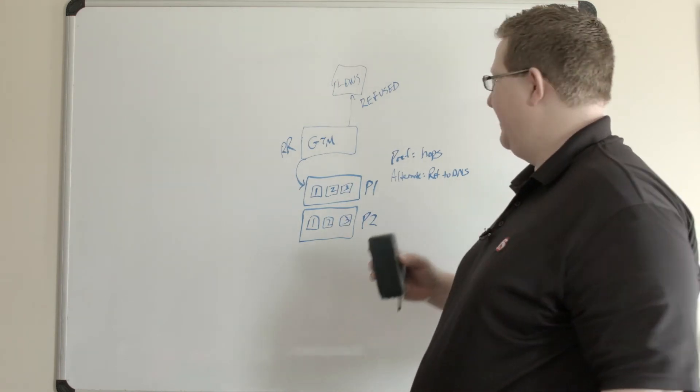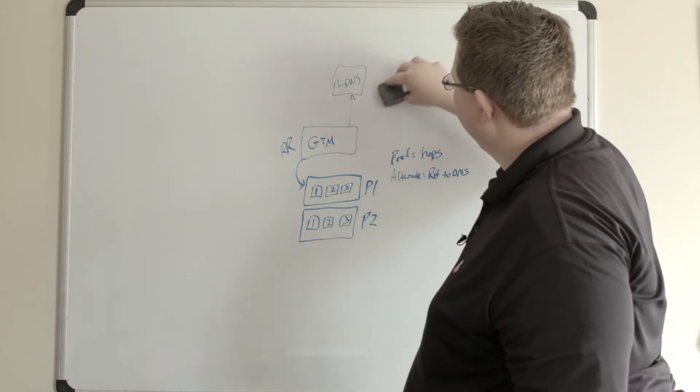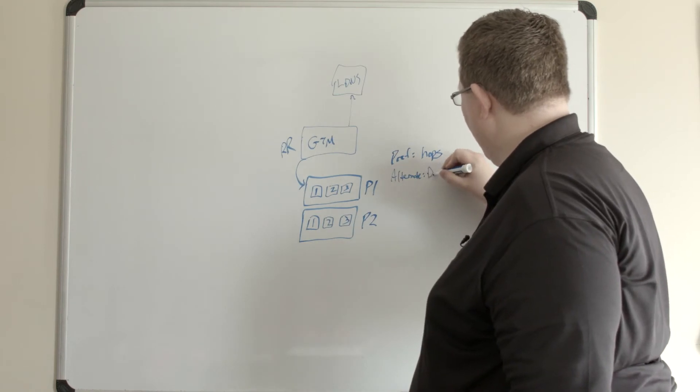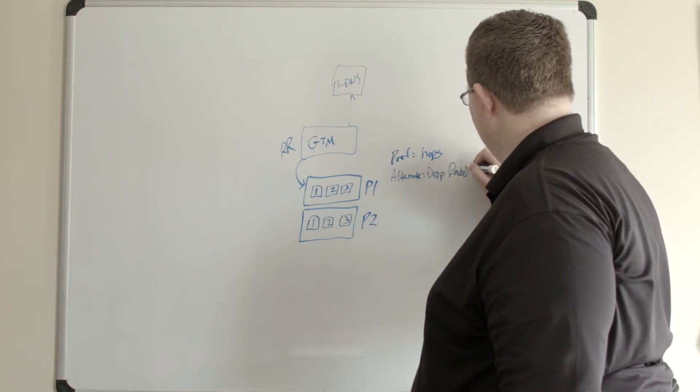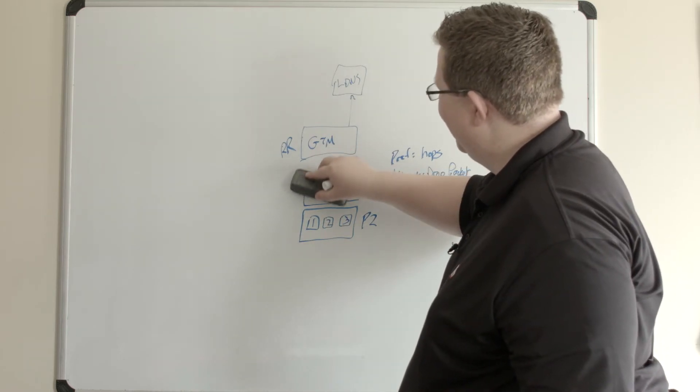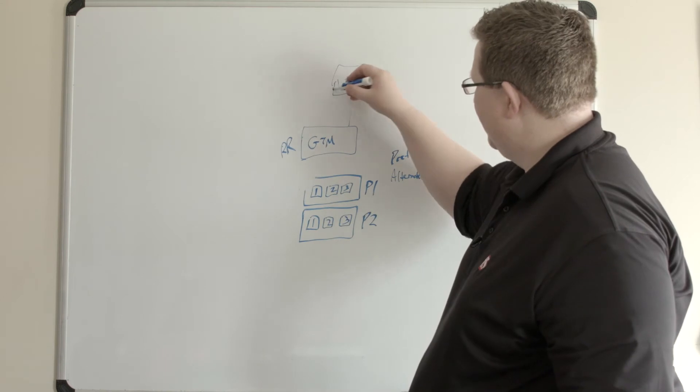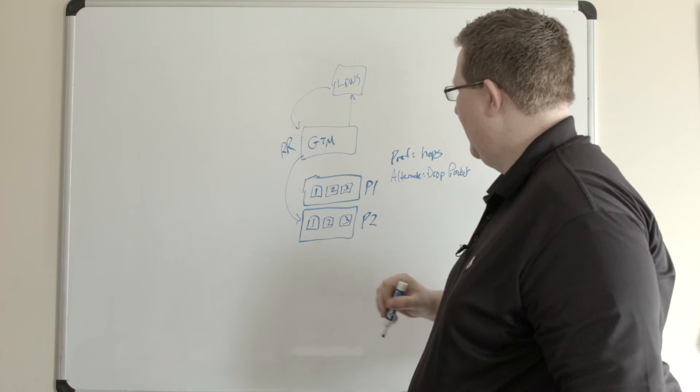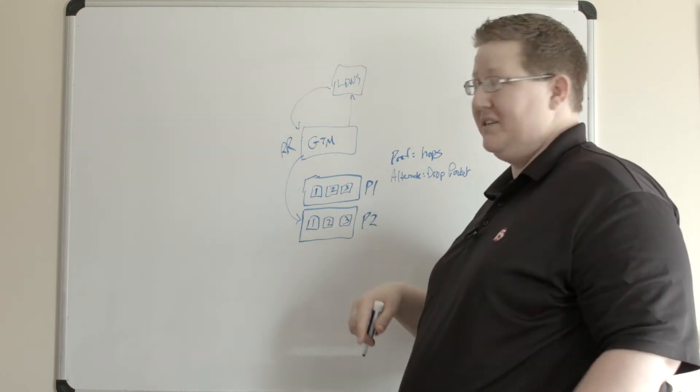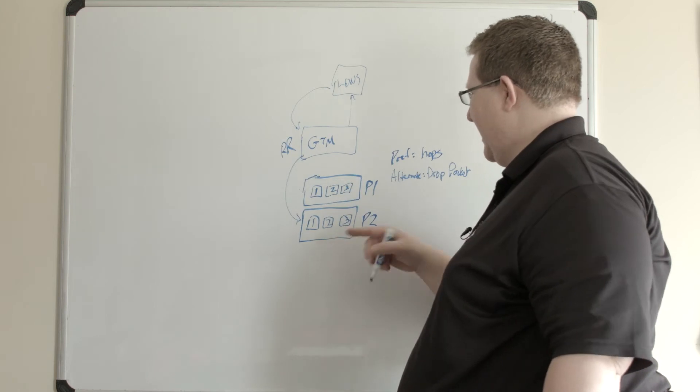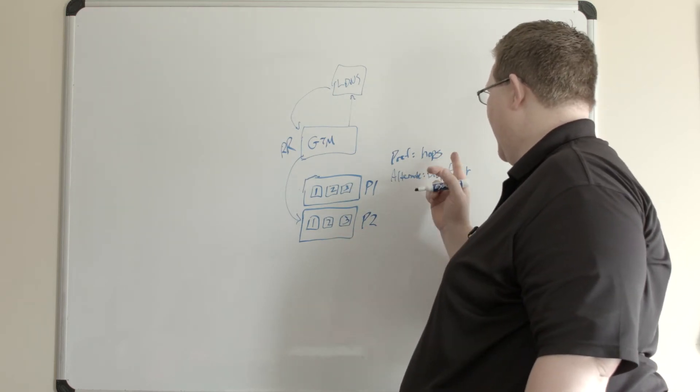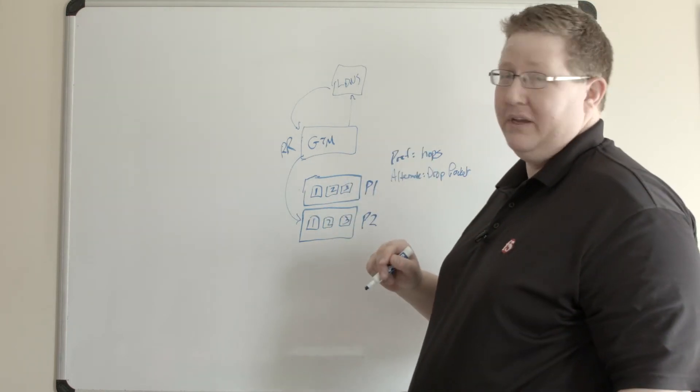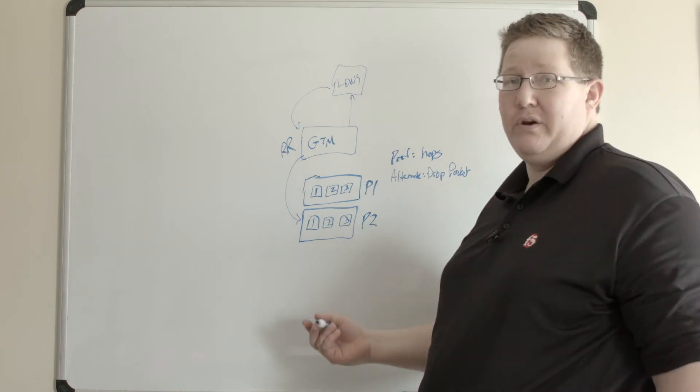Very similar to that but more passive is the dropped packet. Let's stay on hops here and say that our alternative is dropped packet. What that literally is going to do is, let's say that request comes in to GTM. GTM passes that down to pool two. The second request comes in and comes down to pool two. Pool two is configured with a preference of hops, but the alternate is dropped packet. So rather than actively signaling the LDNS server, it's literally just going to drop that packet.